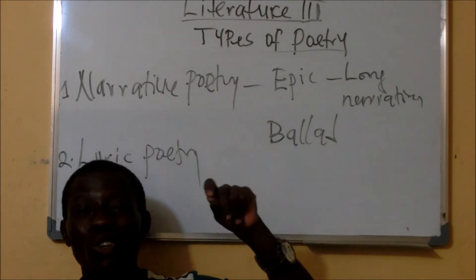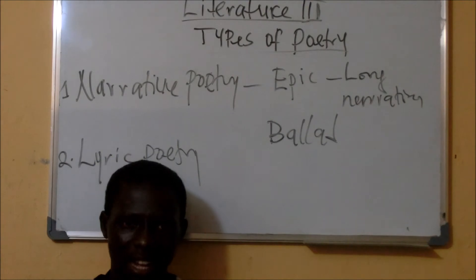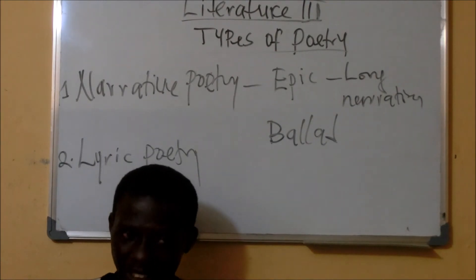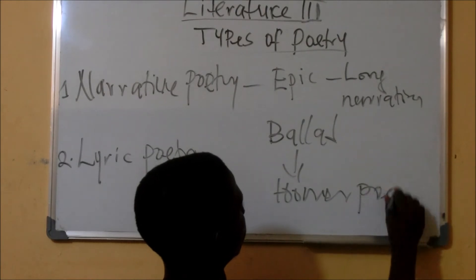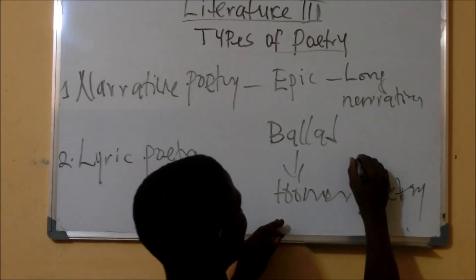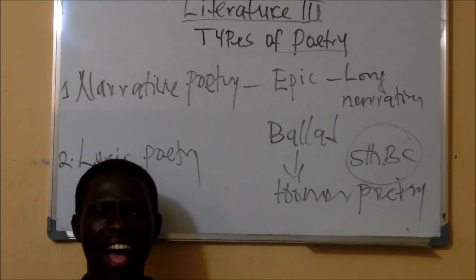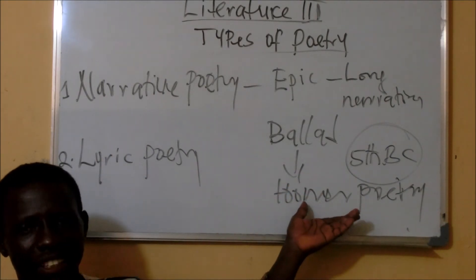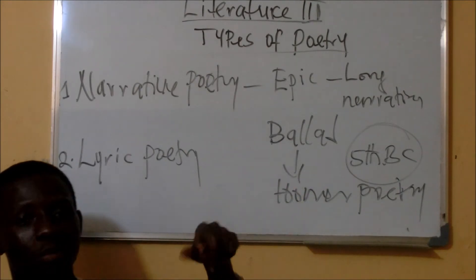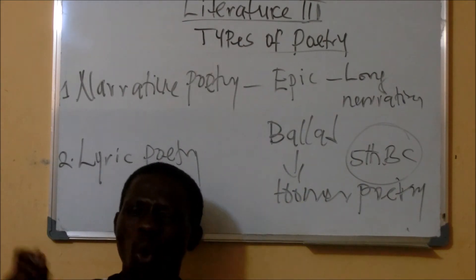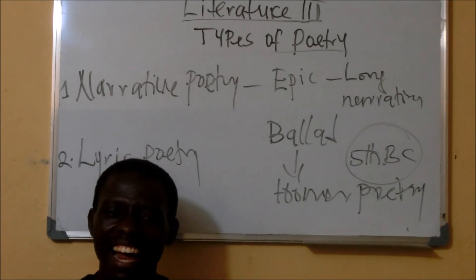Ballad is one of the oldest forms of poetry. The history of ballad as a poetic work of art is traceable to Homer's poetry in Greek, around the 5th century BC, before Jesus Christ was born. Homer was a poet during this century, and during his time ballad had already been in existence. That is why we say ballad is one of the oldest poems.